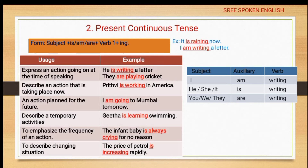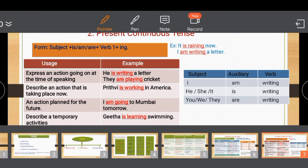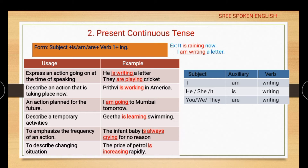The present continuous tense is used to express an action going on at the time of speaking: 'he is writing a letter', 'they are playing cricket'. It also describes an action taking place right now: 'Prudvi is working in America'. It can express a planned future action: 'I am going to move by tomorrow'. It also describes temporary activities: 'Gita is learning swimming'.